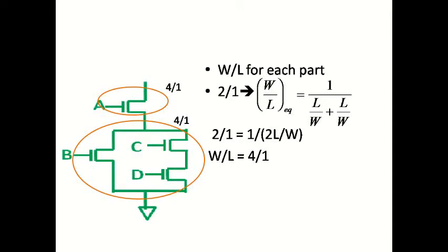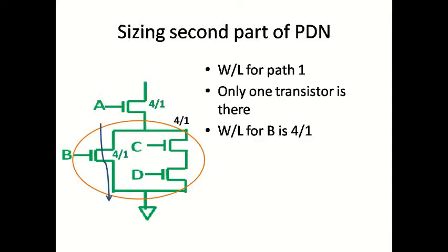This indicates that each part of the pull-down network provides an effective individual W by L equal to 4 by 1. The first part of the network has only one transistor with input A, so its W by L is equal to 4 by 1. For the second path with only transistor B, the equivalent W by L will be shared by transistor B alone, so transistor B will have a W by L of 4 by 1.